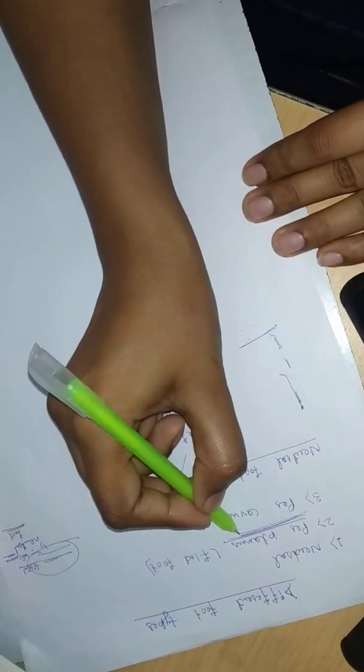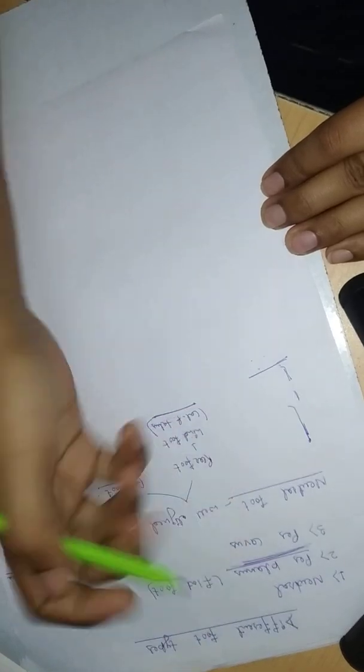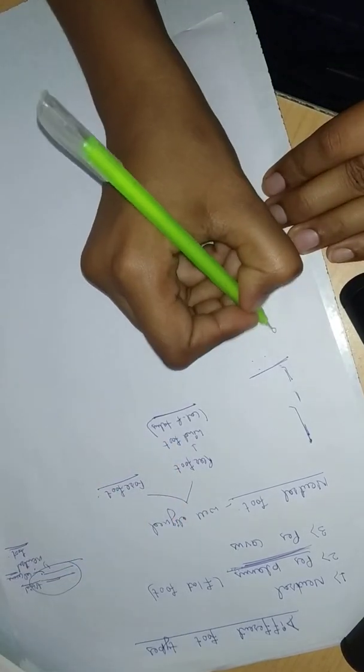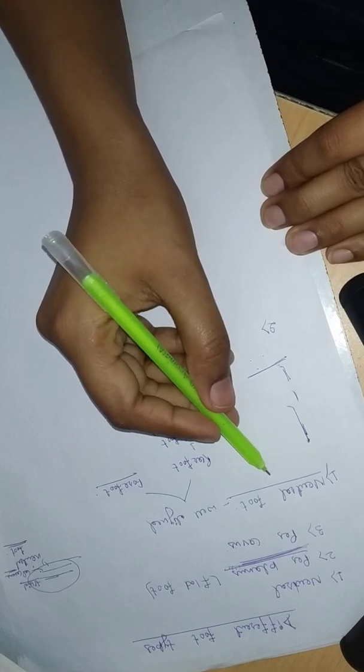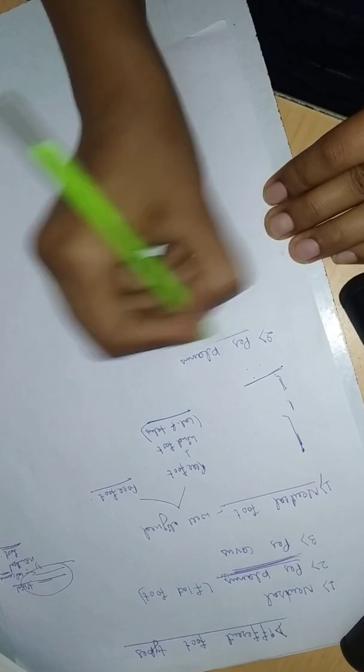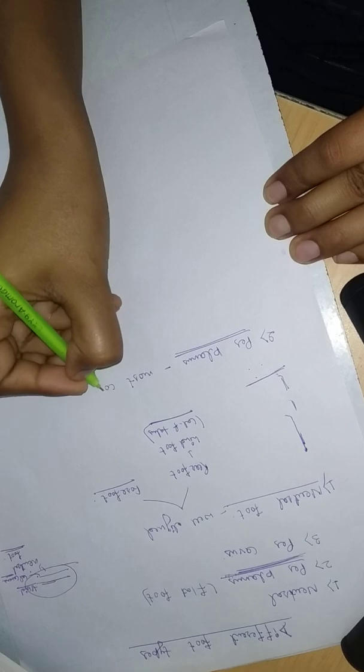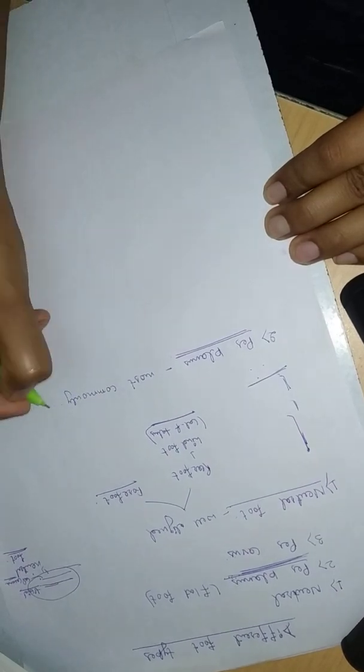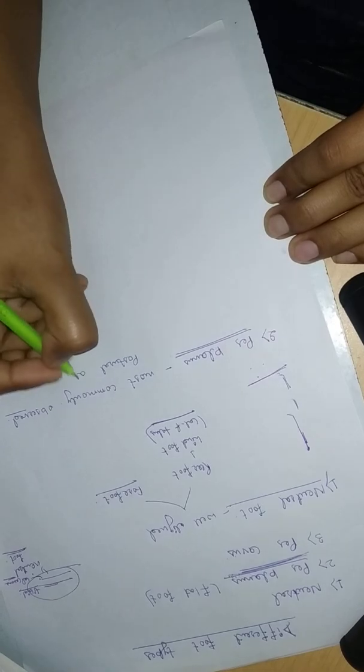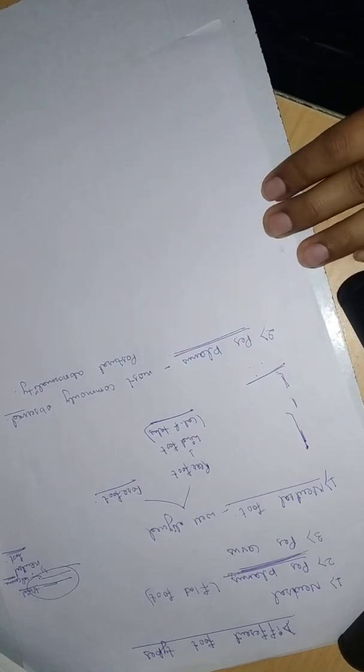After that we are going to discuss about the deformity which is Pes Planus. Pes Planus is the most commonly observed postural abnormality. Both of these are postural abnormality of foot. The second one is this, the first is neutral foot where there is no abnormality. A Pes Planus foot is also called pronated or flat foot.